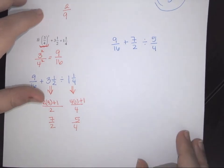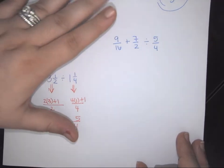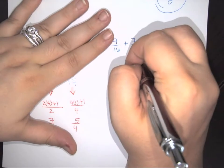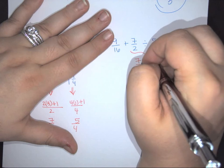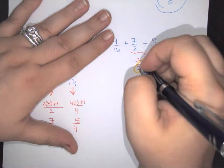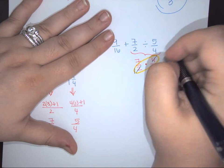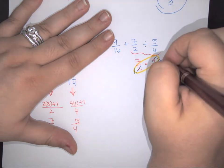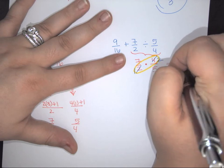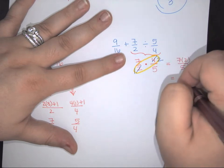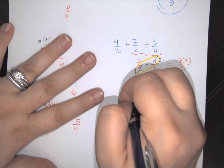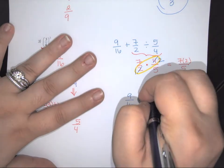With everything written out, I look at multiply, divide, addition, subtraction in order. The next thing I have is division: 7 over 2 divided by 5 over 4. I keep the first — 7 over 2 — change to multiplication, and flip the reciprocal: 4 over 5. 2 and 4 have something in common: 2 goes away, 4 becomes a 2. This reduces down to 7 times 2 all over 5, giving me 14 over 5. I rewrite: 9 over 16 plus 14 over 5.